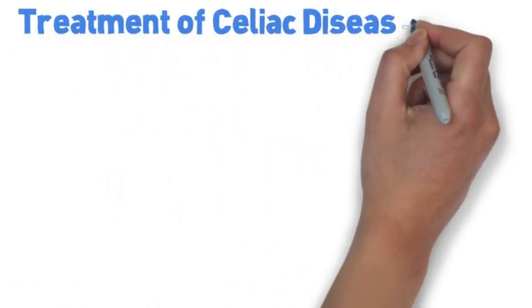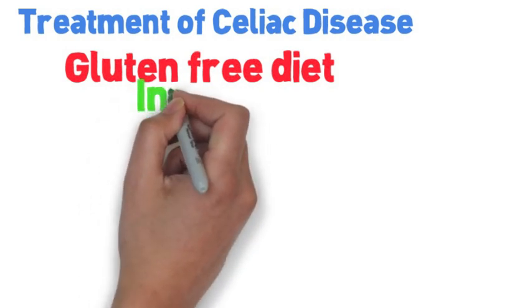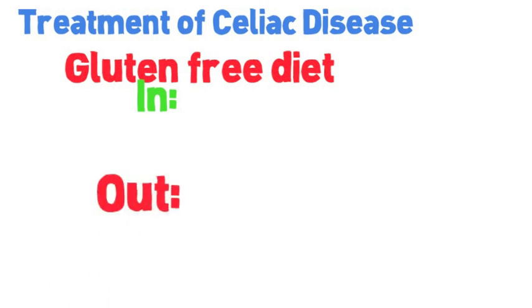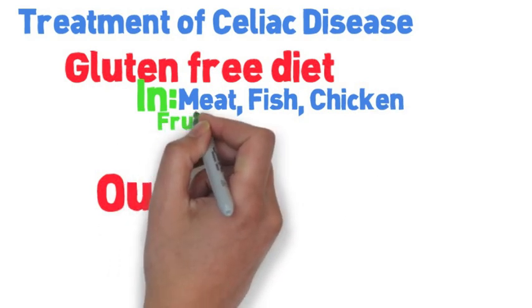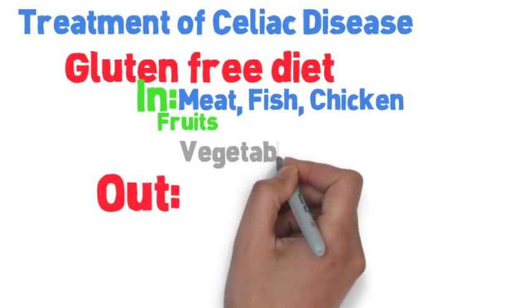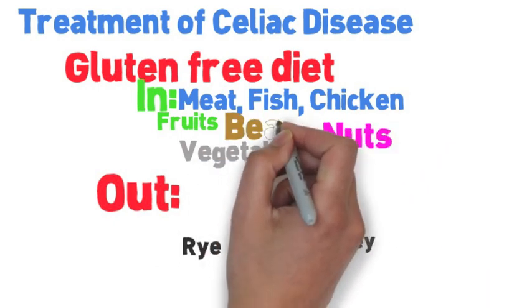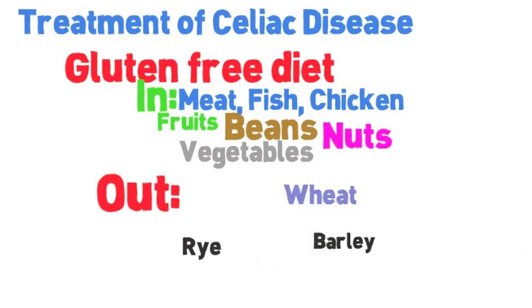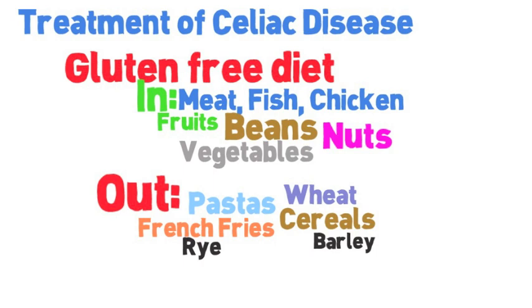How do you treat celiac disease? Really just a gluten-free diet — we avoid the trigger. Gluten-free diets are hard to maintain because there's a little bit of gluten in almost everything. You can eat meat, fish, and chicken as long as they're not breaded. Fruits and vegetables are definitely okay as long as nothing is added. Barley and rye are two things you really need to avoid, along with wheat and pasta, so a lot of Italian food is out unless you get gluten-free pasta. Cereals and french fries are also generally out, but gluten-free menus are developing at various restaurants.